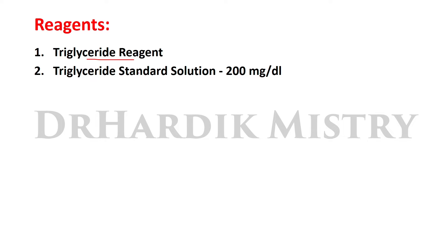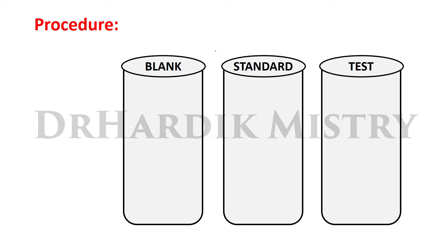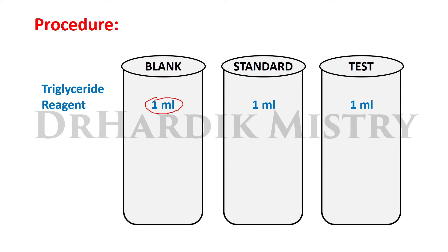Reagents required: triglyceride reagent and triglyceride standard solution with a value of 200 mg/dL. Procedure: take three test tubes and label them as blank, standard, and test. Add 1 mL of triglyceride reagent to all three test tubes. Add 10 microliters of standard solution to the standard test tube, and 10 microliters of sample solution to the test test tube.